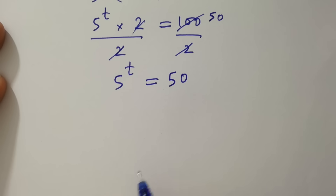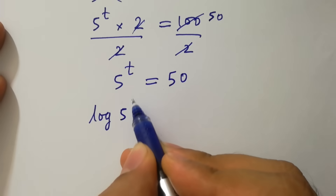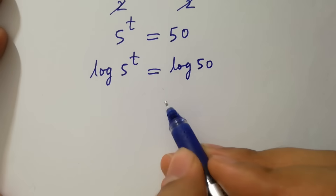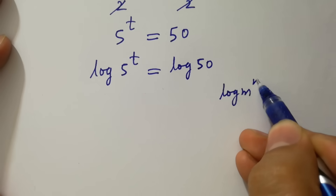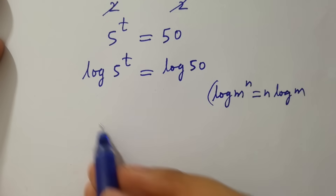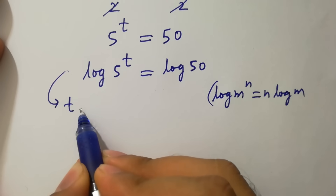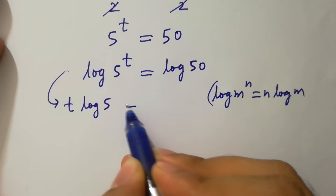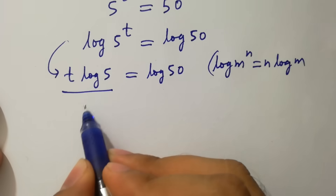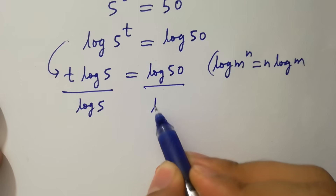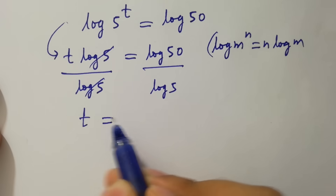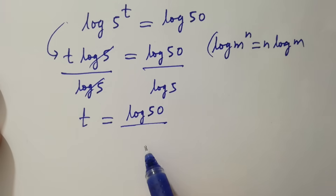To solve this, take log on both sides: log of 5 to the power t equals log 50. Since log m to the power n equals n log m, it becomes t log 5 equals log 50. Divide by log 5 on both sides — log 5 and log 5 cancel — giving t equal to log 50 over log 5.